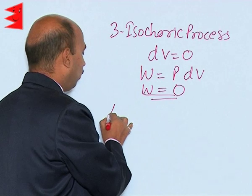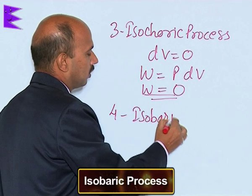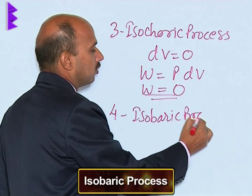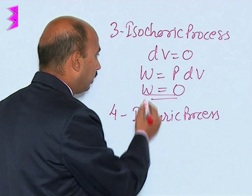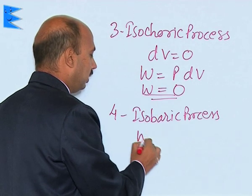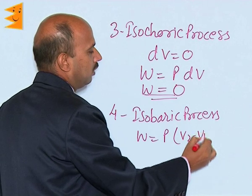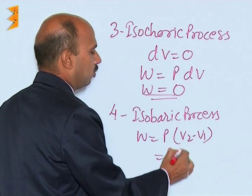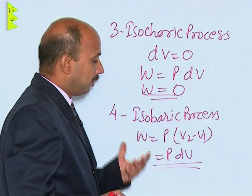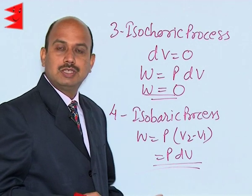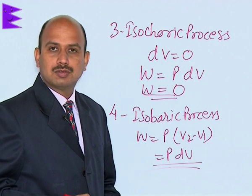The fourth process is called the isobaric process. In an isobaric process, pressure remains constant. The work done can be written as P(V2 - V1), or equivalently as the integral of P·dV, because pressure remains constant while volume changes. These are the two other processes — isochoric and isobaric.